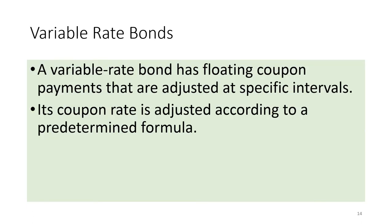A variable rate bond has floating coupon payments that are adjusted at specific intervals. Unlike traditional bonds that pay a fixed rate of interest, variable rate bonds have a floating coupon rate that resets periodically. Its coupon rate is adjusted according to a predetermined formula. Typically, the coupon rates are based on either the federal funds rate or the London Interbank Offer Rate plus an added spread. If interest rates fluctuate, the coupon rates of variable rate bonds adjust accordingly. When rates increase, coupon rates will increase, and when rates decrease, coupon rates drop accordingly.